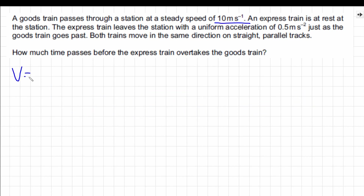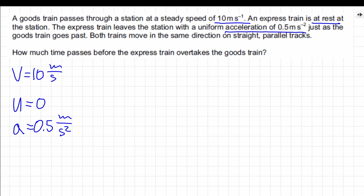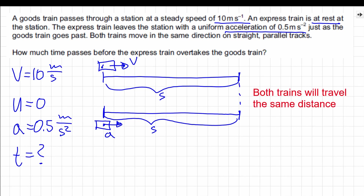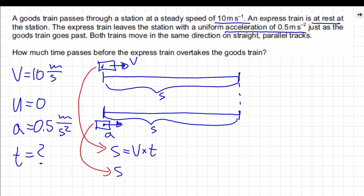This time we know that the goods train is traveling at a constant speed of 10 meters per second. We also know that the express train is stationary at the station and will move with uniformly accelerated motion with an acceleration of 0.5 meters per second squared. We have to calculate the time it will take for the express train to catch up with the goods train. The goods train is traveling with constant velocity, so S equals velocity times time. The express train is moving with uniformly accelerated motion, so the same distance is calculated as ut plus at squared divided by 2.